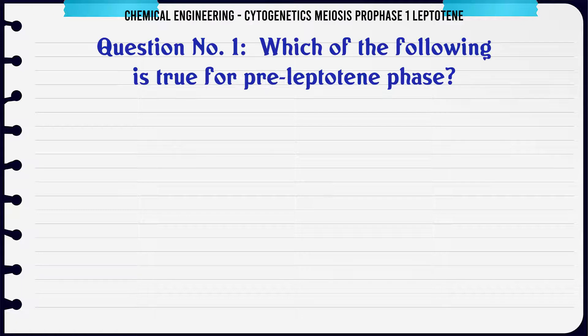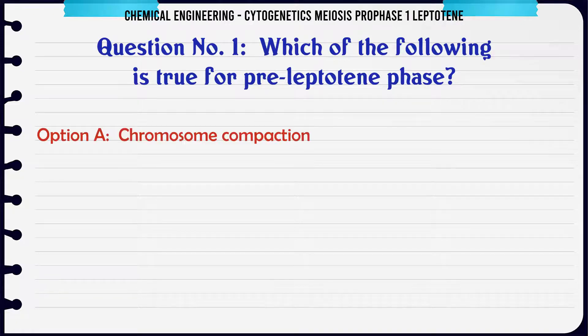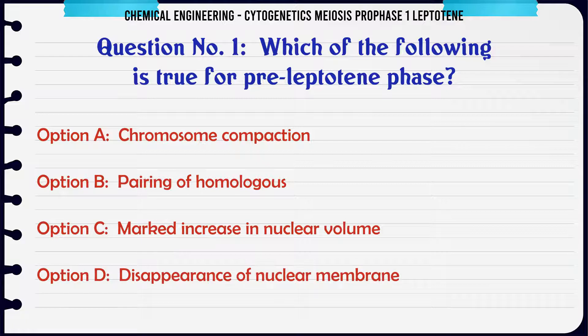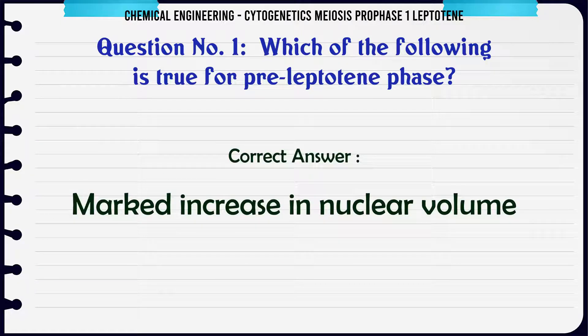Which of the following is true for the pre-leptotene phase? A. Chromosome compaction. B. Pairing of homologous. C. Marked increase in nuclear volume. D. Disappearance of nuclear membrane. The correct answer is: Marked increase in nuclear volume.